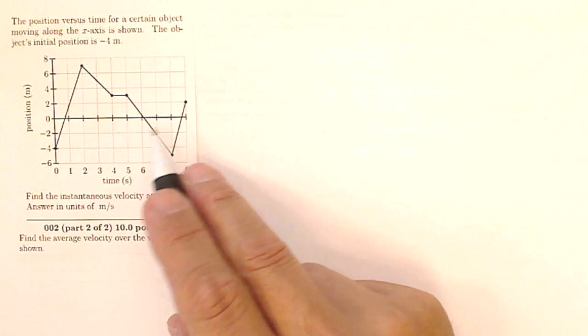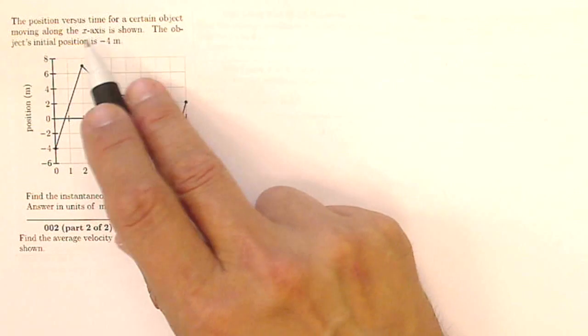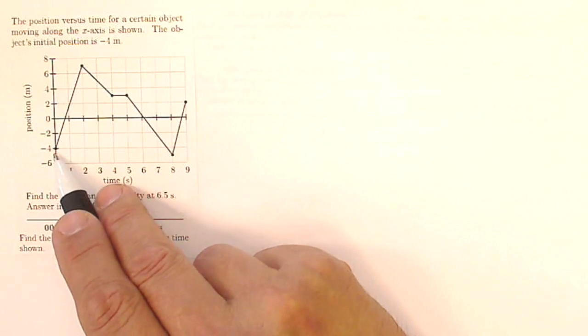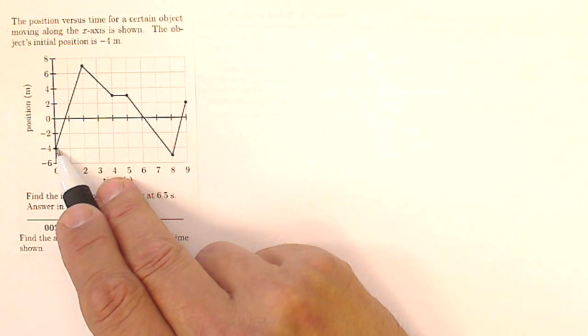This is Mr. Beck Does Your Homework. This is physics homework number four. This is question one and two, a two-part question. The first part says the position versus time for a certain object moving along the x-axis is shown. The object's initial position is negative four meters, so it's starting at negative four meters.